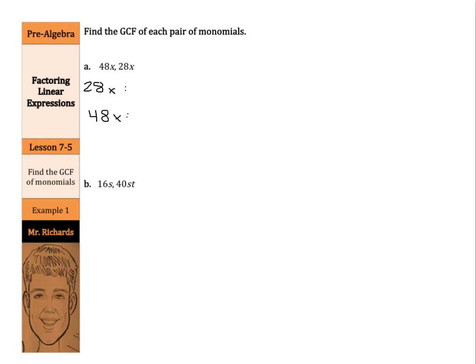How can I find the GCF of 28? In the past, you may have used a tree diagram. 28 is the product of 4 and 7, and 7 is done. And 4 is the product of 2 and 2, so 28 is the product of 2 times 2 times 7.